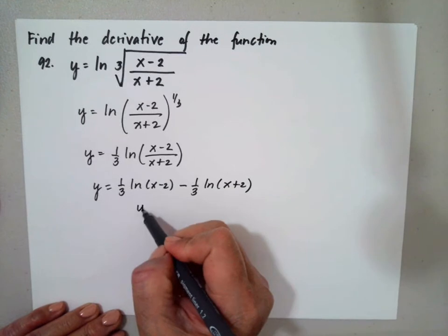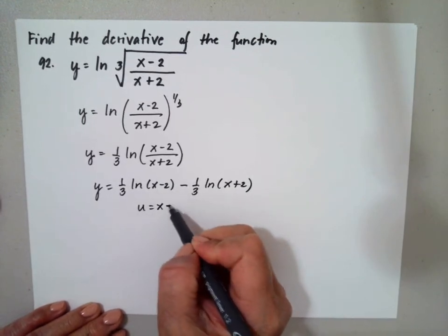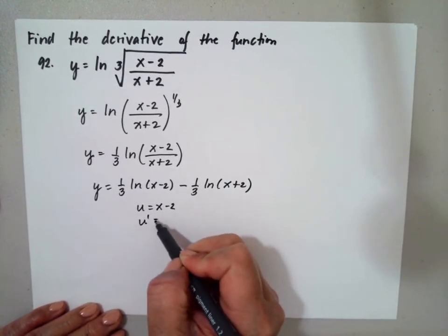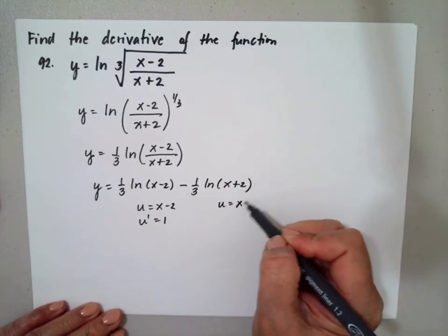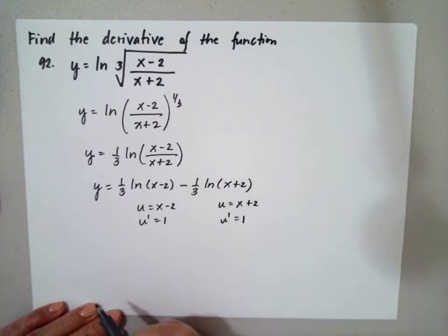For u of the first term is x minus 2 and u prime is 1. And the u of the second term is x plus 2 and u prime is just equal to 1.